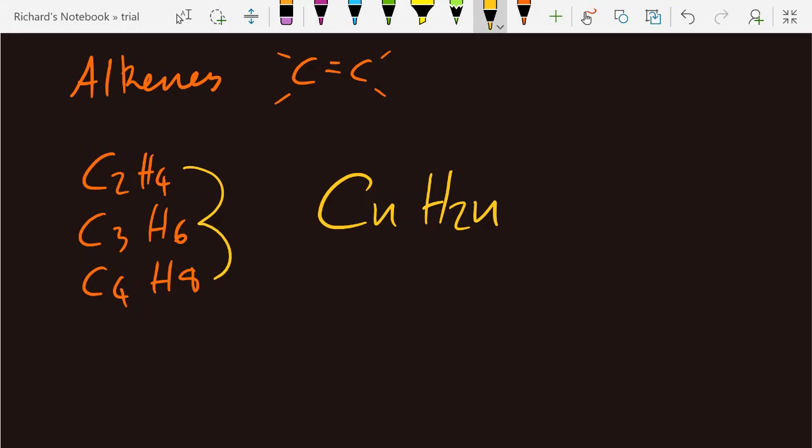Now this general formula also applies to another homologous series, the cycloalkanes. The IB have asked about this once or twice. For example, the alkene with 6 carbons is going to have 12 hydrogens. But this formula could be hexene or it could be cyclohexane.